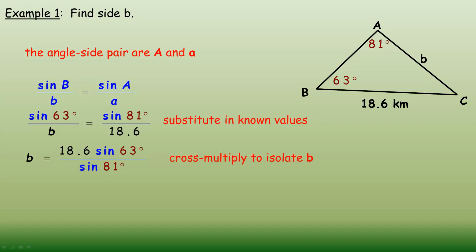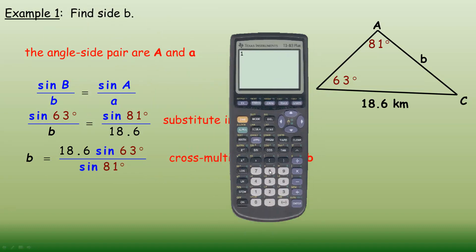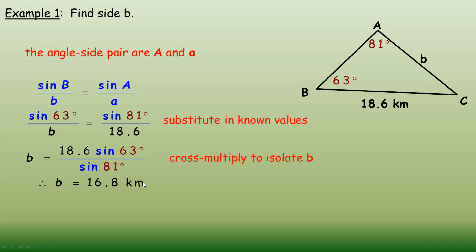On the calculator: 18.6 times sine 63, divided by sine 81. Rounding to one decimal place — matching the given data — we get 16.8. That 7 rounds the result up to 8, so side B works out to 16.8 kilometers.